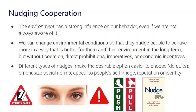People have experimented with different types of nudges, such as making a more desirable option easier to choose — for example, in the supermarket positioning healthier food where people more easily see it. Other types include emphasizing social norms, appealing to people's self-image, reputation, or identity. Simple signs that we see in our environment that try to get us to behave in certain ways can be considered nudges.